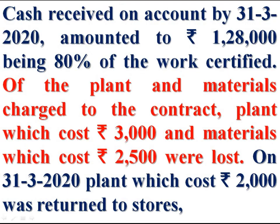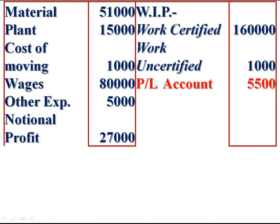Of the plant and materials charged to the contract, plant which cost Rs 3,000 and materials which cost Rs 2,500 were lost. These losses are to be transferred to profit and loss account. They are to be credited. Rs 3,000 plus Rs 2,500 equals Rs 5,500.